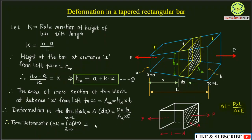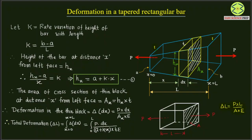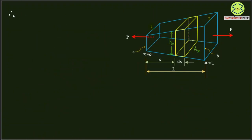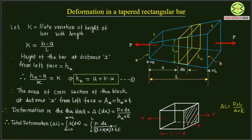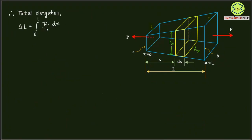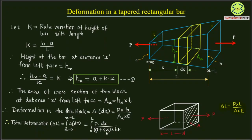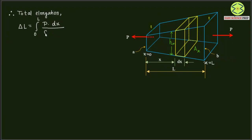So the total elongation δL equals the integral from 0 to L of p·dx divided by Ax·E. The area Ax equals hx × t, and hx = a + k·x, so Ax = (a + k·x) × t. Therefore δL equals the integral from x = 0 to x = L of p·dx divided by (a + k·x)·t·E.